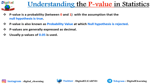On the other hand, a larger p-value — say, for example, 0.9 — means that your result has a 90 percent probability of being completely random and not due to anything in your experiment. Therefore, the smaller the p-value, the more significant your result would be.